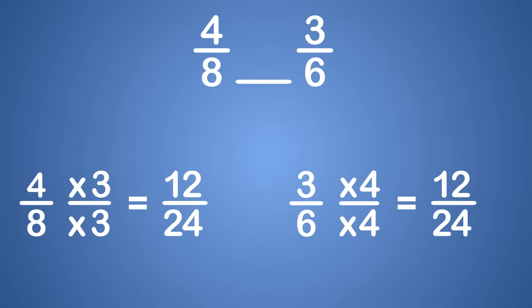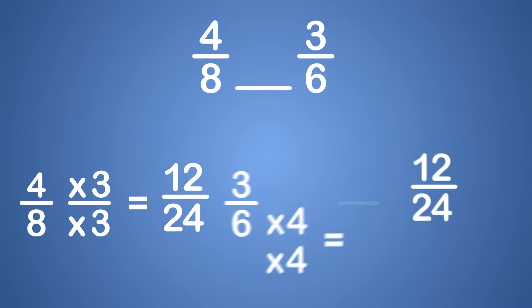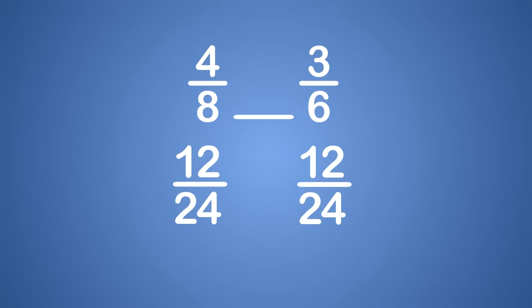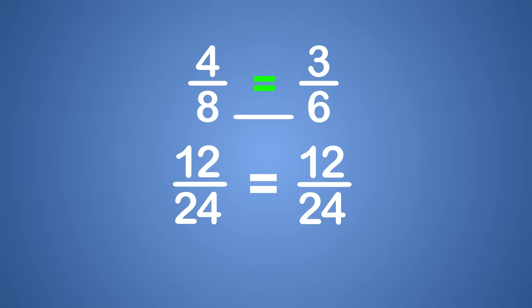So let's compare the equivalent fractions. Which symbol do we use — greater than, less than, or equal to? 12 twenty-fourths and 12 twenty-fourths are equal to each other. Awesome job! We compared the fractions by making an equivalent fraction. So 4 eighths is equal to 3 sixths.